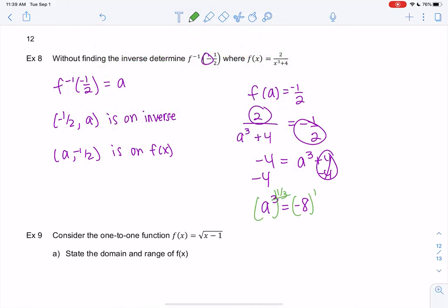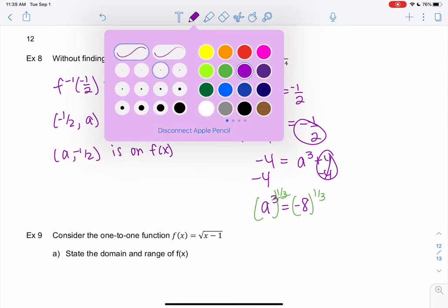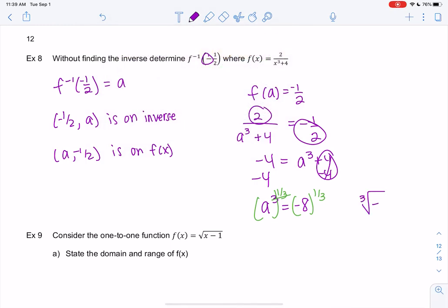This is an odd power, so this is allowed. We do a cube root or one-third power, whichever you remember. What number to the third power gives me -8? That would be -2. So a = -2. That means f⁻¹(-1/2) = -2.